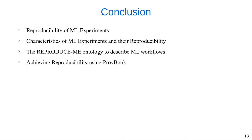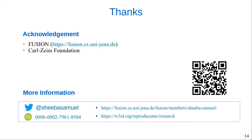To conclude, machine learning is said to be experiencing a reproducibility crisis. In this paper, we propose our first solutions to address the underlying problem. We propose to apply fair data principles to machine learning workflows. With the ReproduceMe ontology, we aim to describe machine learning workflows, and we demonstrate the use of ProveBook in achieving reproducibility in machine learning. Finally, I would like to acknowledge Fusion, our team at the University of Vienna, and Carl Zeiss Foundation for the funding of this work. You could find more information on this research in the shown links. Thank you.